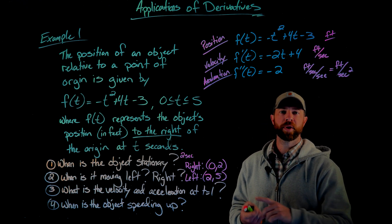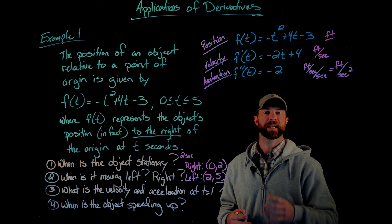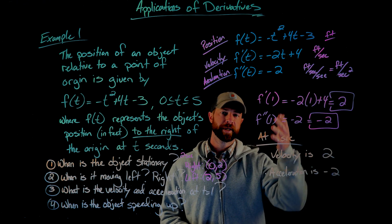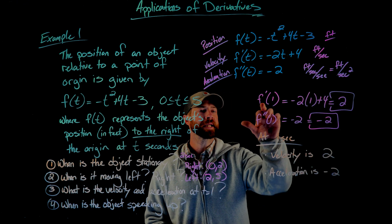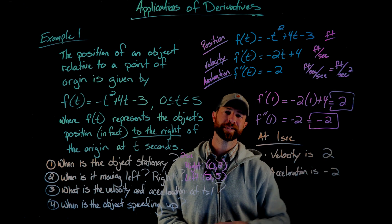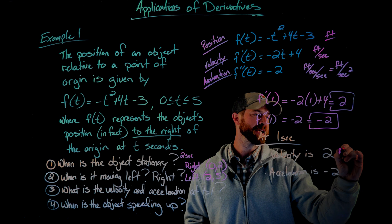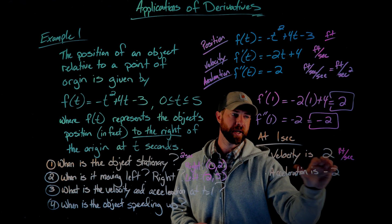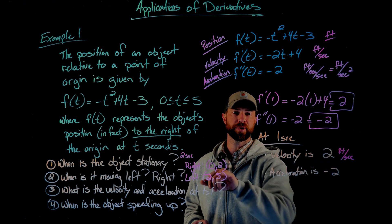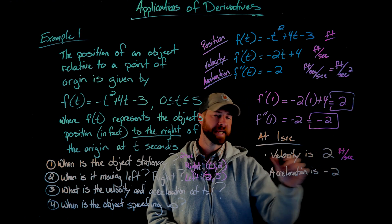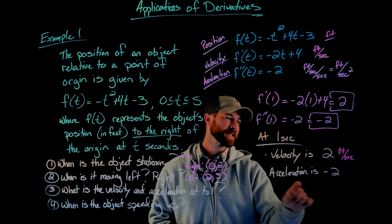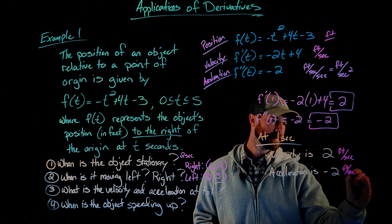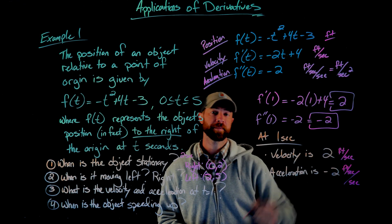Our third question asks: what is the velocity and the acceleration at one second? All we need to do is plug in 1 for both functions. When I plug 1 into the velocity equation, I get 2 — meaning the velocity at one second is 2 feet per second, so it's moving to the right, which agrees with our previous statement. The acceleration in this case is negative 2 feet per second per second, as defined earlier from the units of the acceleration function.